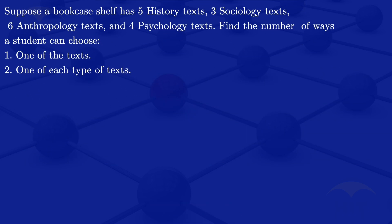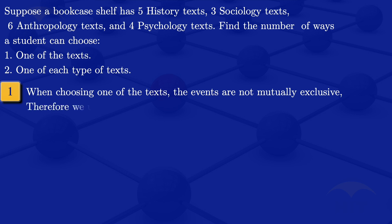I'll start by looking at number one. When choosing one of the texts, the events are not mutually exclusive, therefore we use the product rule. When using the product rule, we'll be multiplying those values: the 5, 3, 6, and 4. So the number of ways is 5 times 3 times 6 times 4, which gives us 360.